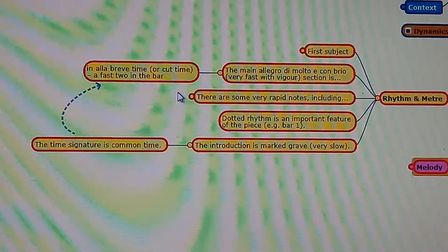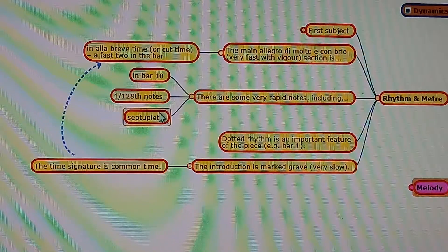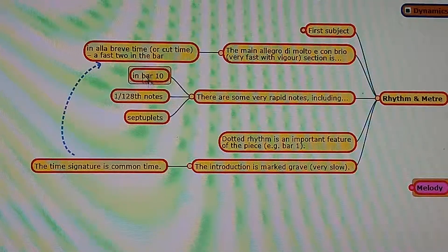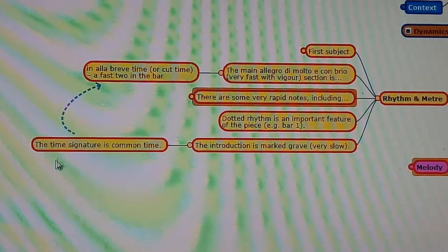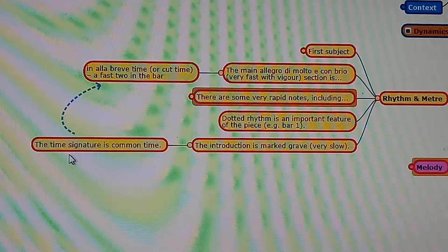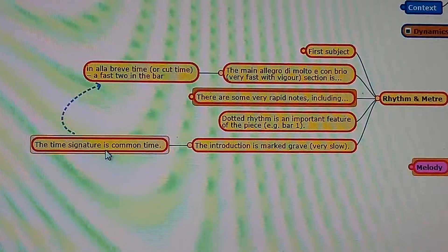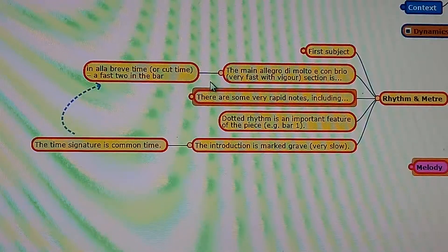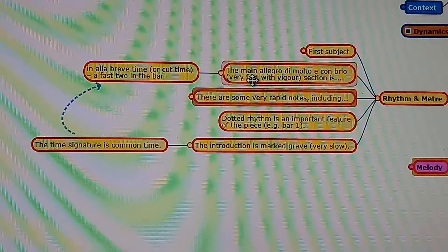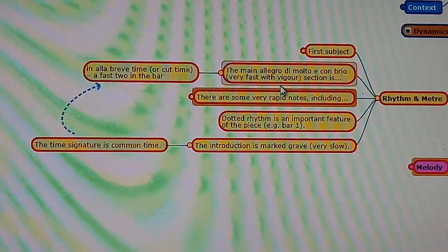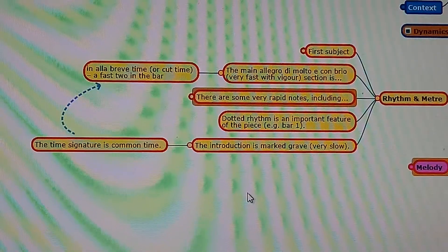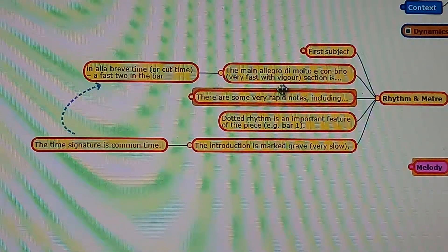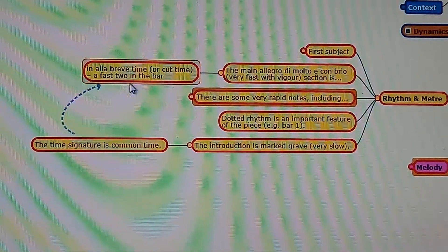There are some very rapid notes including septuplets and 128th notes in bar 10. The main allegro is in alla breve time, or cut time — a fast two in a bar. This is the tempo of the main Allegro di molto e con brio, meaning very fast with vigour. So the introduction is in common time, that's four in a bar, whereas the main allegro is in alla breve time — two in a bar.